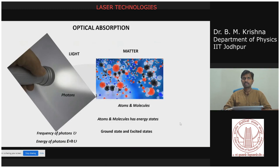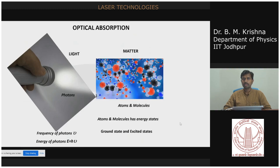Now we are going to study the fundamentals of lasers, starting with optical absorption. Light is nothing but a stream of photons. These photons interact with materials or matter, which consists of atoms and molecules. These atoms have different energy states. When a photon interacts with atoms, the atoms get excited — they absorb energy from the photon and vibrate or rotate, reaching a higher excited state. This is called optical absorption. The frequency of photons is nu, and the energy of a photon is E equals h-nu.